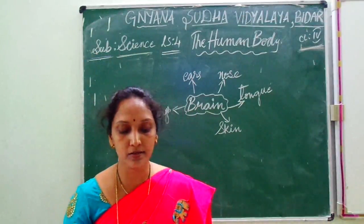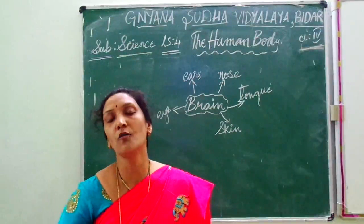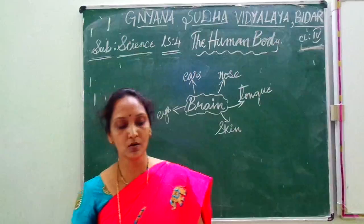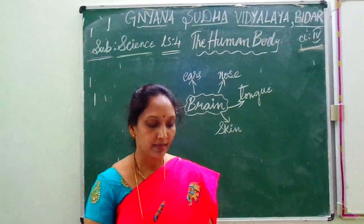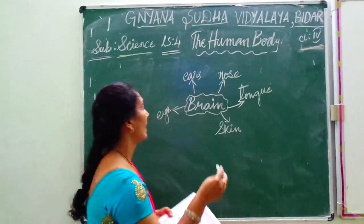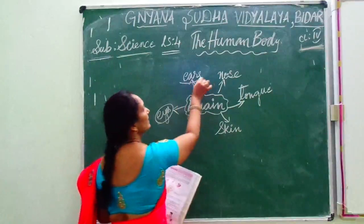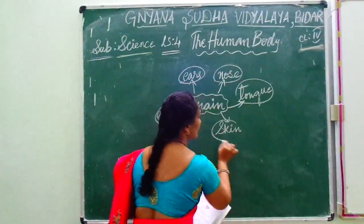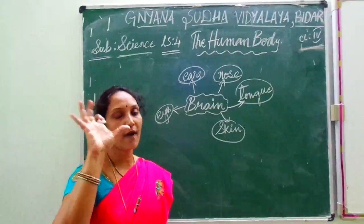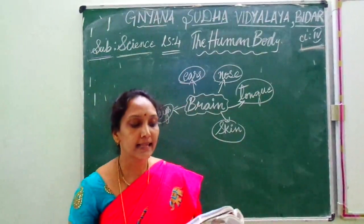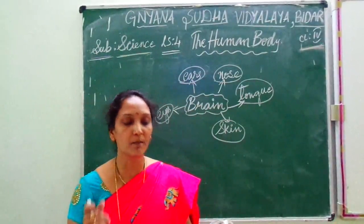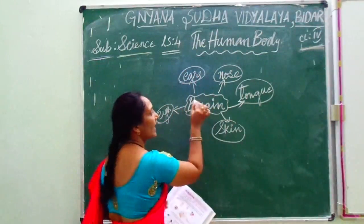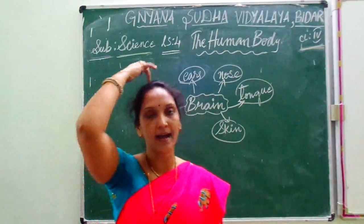The sense organs in our body help us to know the outside world. With the sense organs, we know about the outside world. The sense organs are: eyes, ears, nose, tongue, and skin. There are five sense organs, and these organs are controlled by the brain which is inside our head.